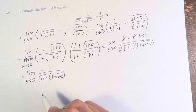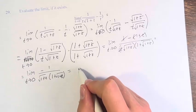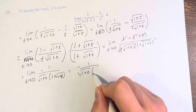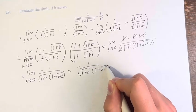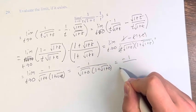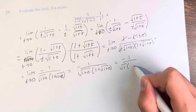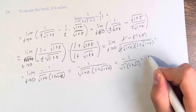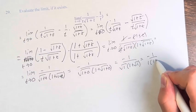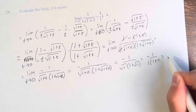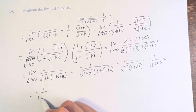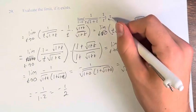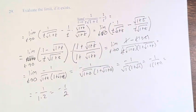Now we can just plug in 0 into our fraction, and we have negative 1 over the square root of 1 plus 0 times 1 plus the square root of 1 plus 0. This is negative 1 over the square root of 1 times 1 plus the square root of 1, which is negative 1 over 1 times 2, giving negative 1 half. Therefore, the value of this limit is negative 1 half.